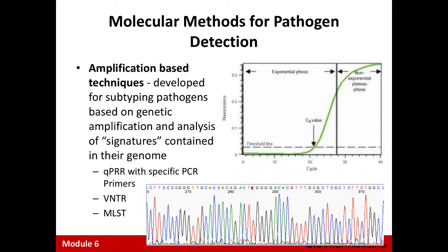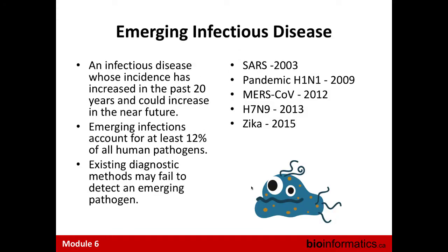Amplification-based techniques use primers designed to amplify a specific region from a specific genome. Quantitative PCR adds a fluorescent tag to the primer, and as you perform the PCR operation you see a rise in the fluorescent signal over cycles. It is a very sensitive technique that can detect very low amounts of pathogen. These are the existing set of molecular diagnostics used routinely for surveillance of existing infectious diseases.